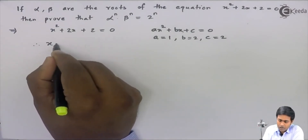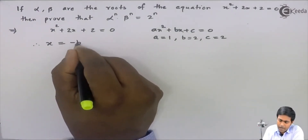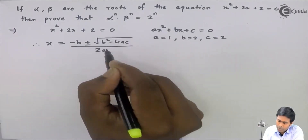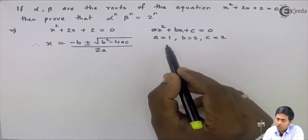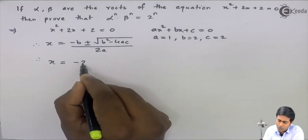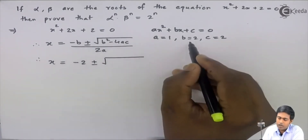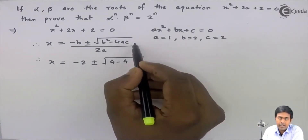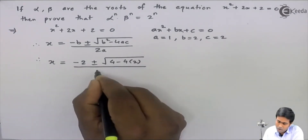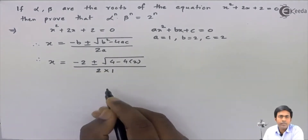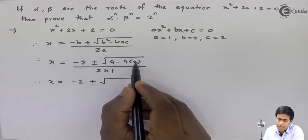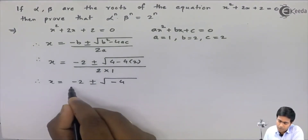As per the quadratic formula, the roots are given by: x = (−b ± √(b² − 4ac)) / 2a. Substituting the values: x = (−2 ± √(4 − 4×1×2)) / (2×1), which gives x = (−2 ± √(4 − 8)) / 2, which simplifies to (−2 ± √(−4)) / 2.